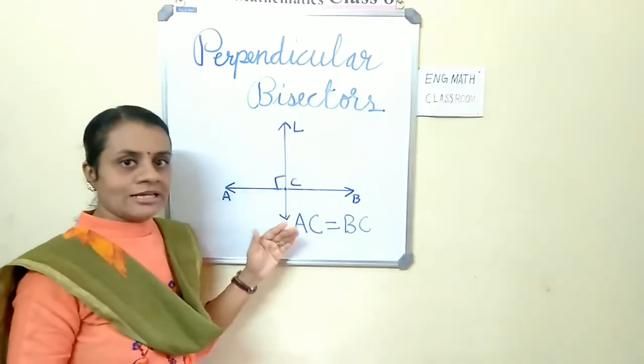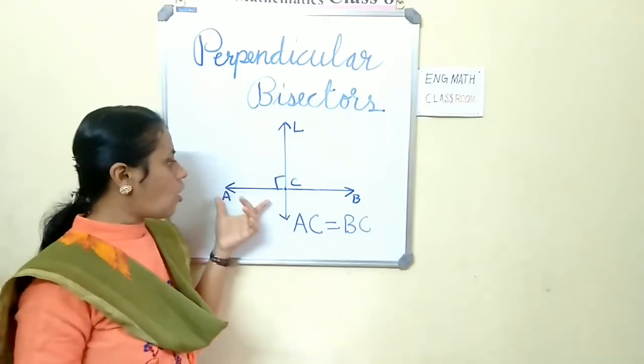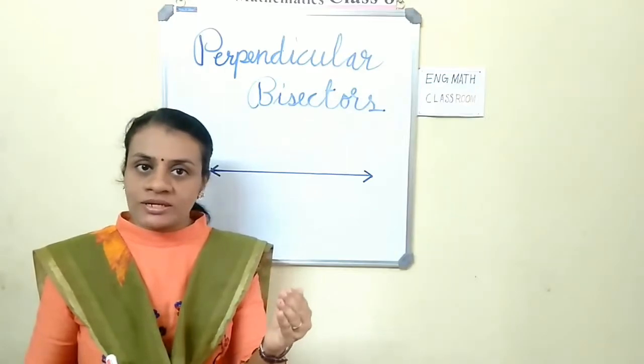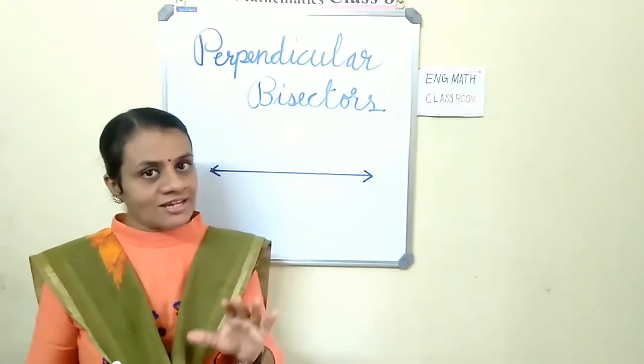That line is called perpendicular bisector. Here, line L is the perpendicular bisector of line AB. Now, what is the difference between a line and line segment?